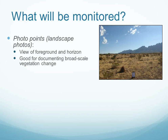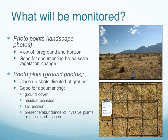We also have to ask what exactly will be monitored. There are two main types of photos used in photo monitoring. Photo points, often referred to as landscape photos, are photos taken where there is a view of the foreground and the horizon — these are very good for documenting broad-scale vegetation change within a landscape. The second type are photo plots, also called ground photos — close-up shots directed at the ground, very good for documenting ground cover, residual biomass, evidence of soil erosion, and the presence and abundance of invasive plants or species of concern.